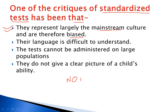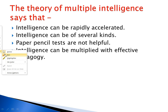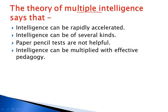The next question is about the theory of multiple intelligences. Multiple intelligences, as the name itself suggests, means that intelligence can be of several kinds. So this is the correct option for this answer.